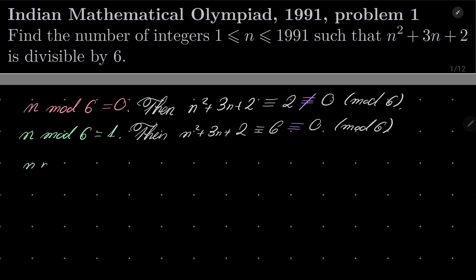n ≡ 2 (mod 6). Well, then n² + 3n + 2 is congruent to 2² = 4, plus 6 is 10, plus 2 is 12. 12 is of course congruent to 0 modulo 6. Okay, next case.